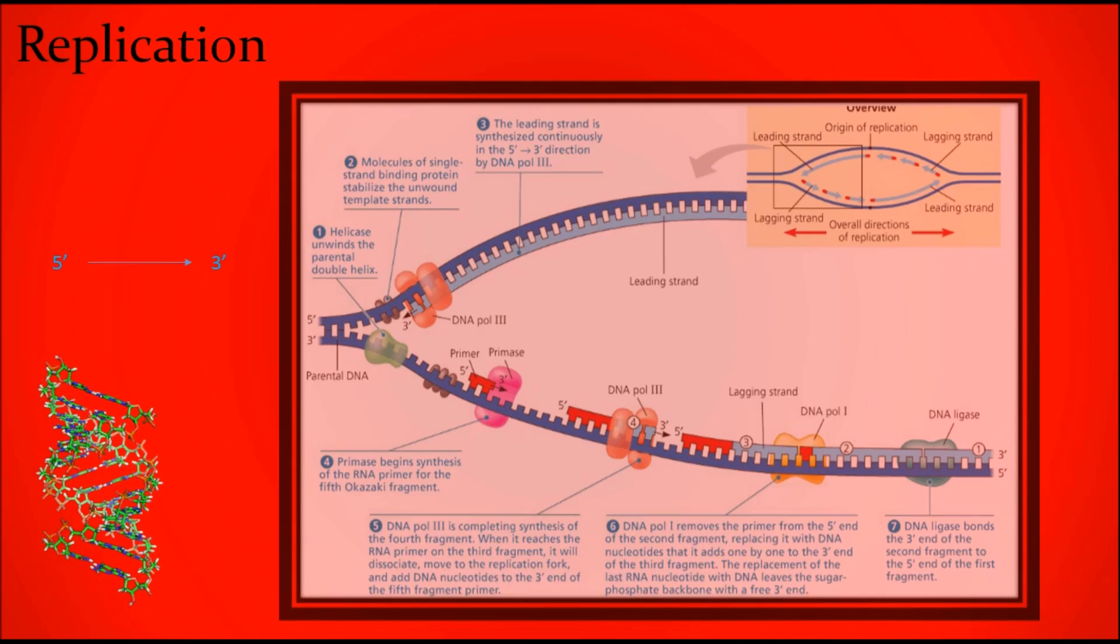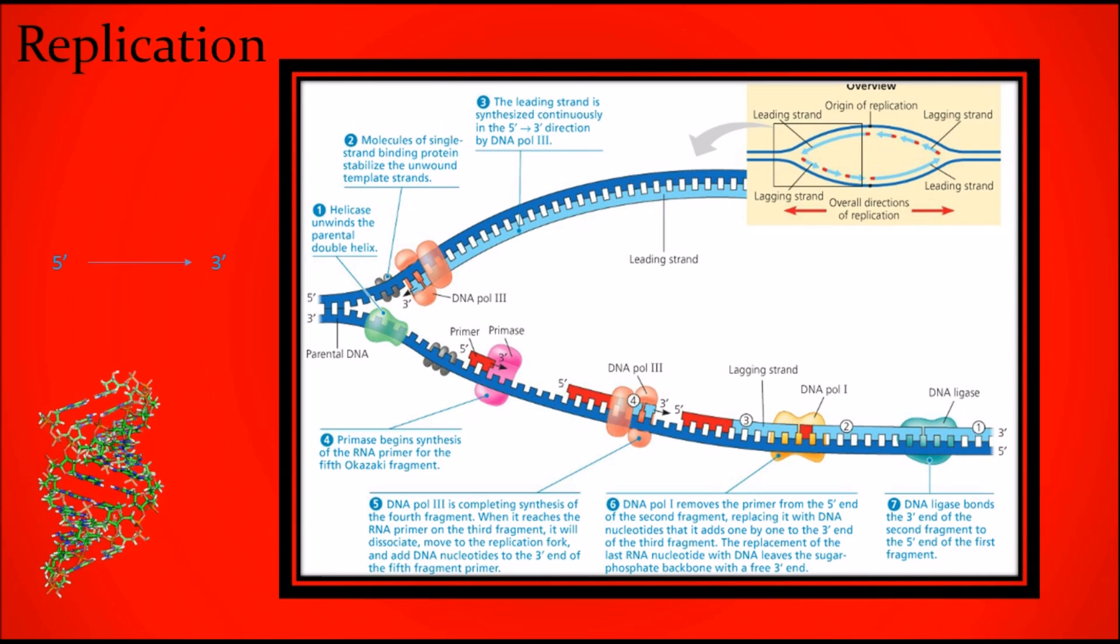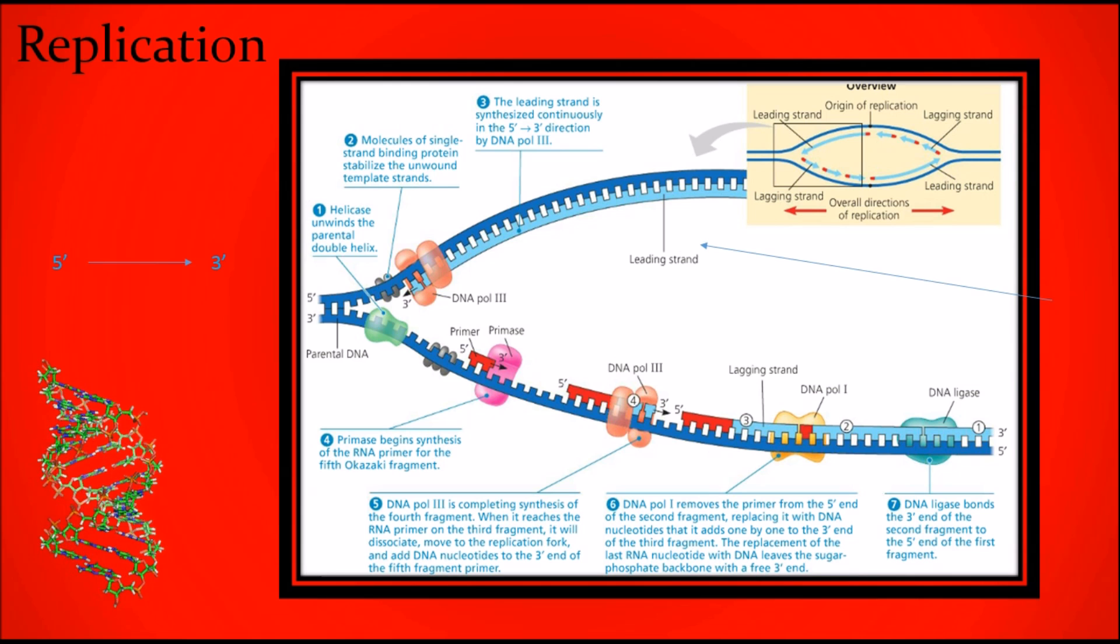Always 5 prime to 3 - new nucleotides added by polymerase, smooth for the leading strand, fragments joined by ligase for the lagging - nuclease cuts out mistakes and repairs